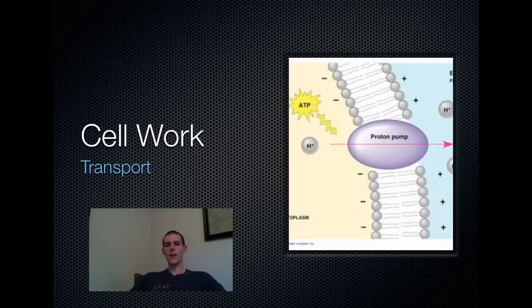Cell work can also be classified as transport. Now, this is going to be mostly the pumping and transporting things that we talked about in our cell membrane discussion. So, it could be pumping an ion against a gradient, as it shows in the picture there. It could be some sort of active diffusion or facilitated diffusion, although those don't take energy, so maybe they wouldn't count. But if something is being transported, it's going to go into this category.